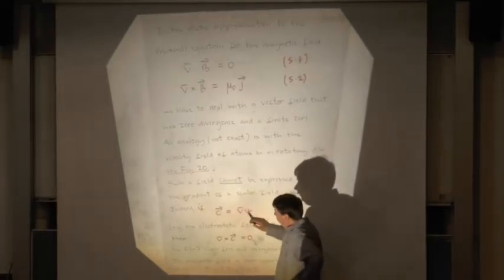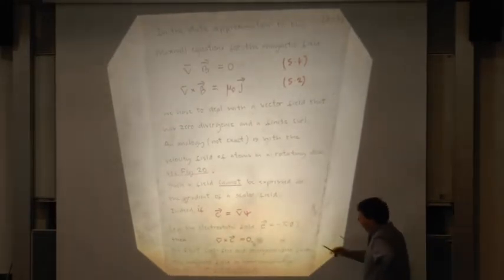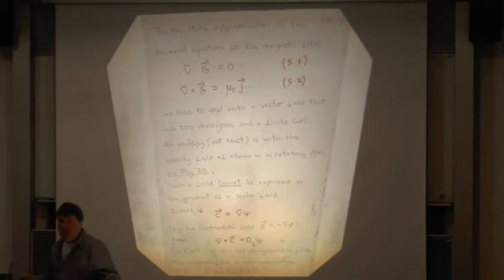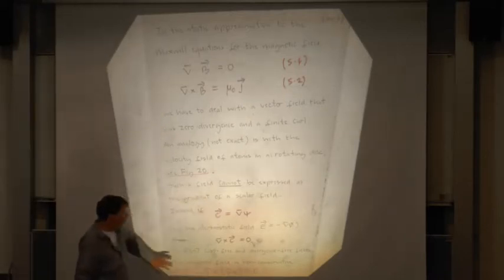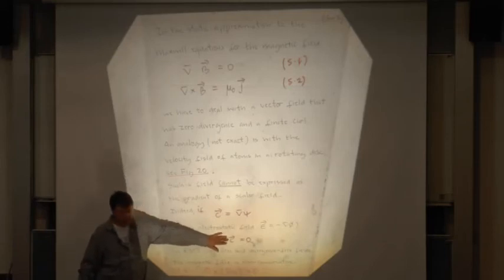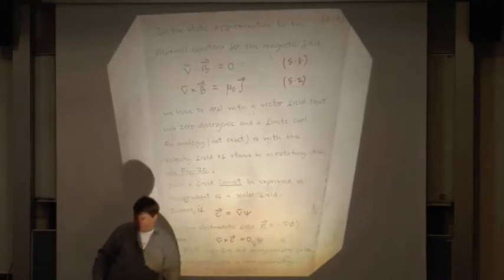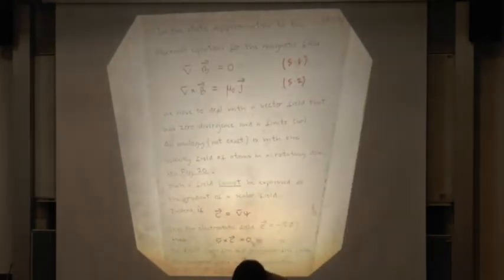If this is true, then the curl must be equal to zero. The curl of a gradient is equal to zero — that's the first of three very important things I'm going to prove in this lecture. Let's prove that: it is extremely straightforward.